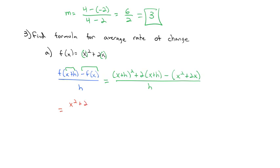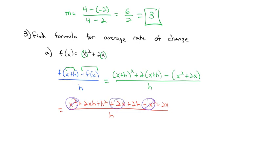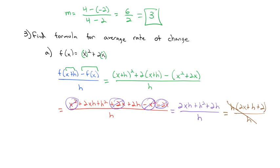Squaring (x+h) gives x² + 2xh + h². Distributing the 2 gives +2x + 2h. Distributing the negative gives −x² − 2x, all over h. The x² terms cancel, the 2x terms cancel, leaving 2xh + h² + 2h all over h. Every term in the numerator has an h, so we factor it out: h(2x + h + 2) / h. The h's divide out, leaving a formula for the average rate of change of 2x + h + 2.